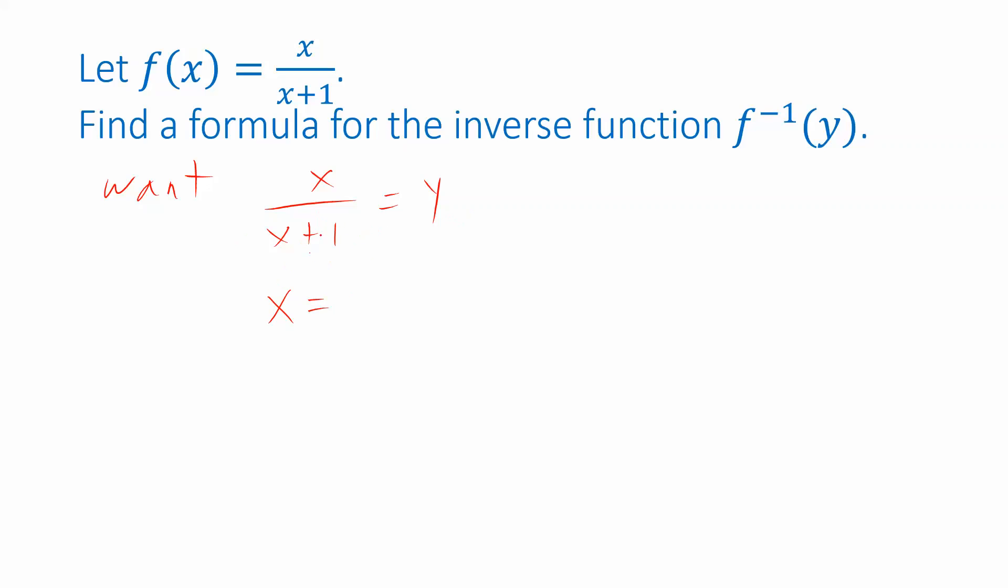x plus 1 cancels on the left side and on the right side I get y times x plus 1. And then I can get rid of those parentheses by multiplying, getting y times x plus y if I distribute this y. Now remember my goal was to isolate x so let's get x on just one side of the equation. First I can subtract y times x from both sides and then from each of these terms I can factor out an x.